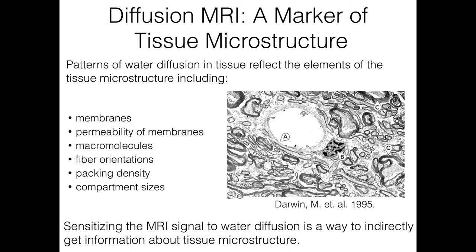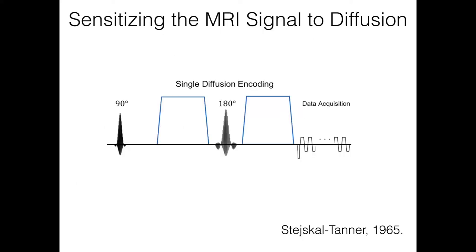Tissue microstructure includes components like membranes, macromolecules, and fiber orientations. By sensitizing the MRI signal to water diffusion, we can indirectly access this information. The most common way to encode diffusion uses two magnetic gradients of equal and opposite effect placed on opposite sides of the refocusing pulse. They cause a phase shift relative to spin location, and if spins move due to diffusive displacements between the two gradients, they won't be fully rewound, resulting in a detectable signal attenuation.